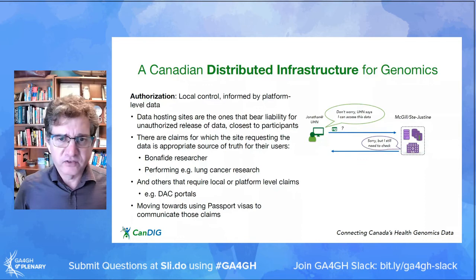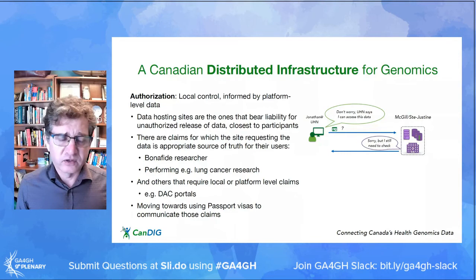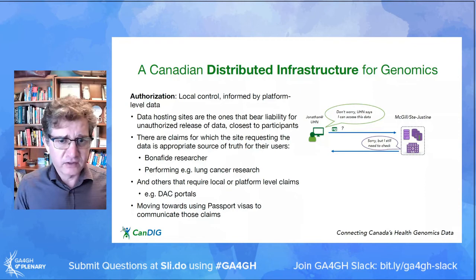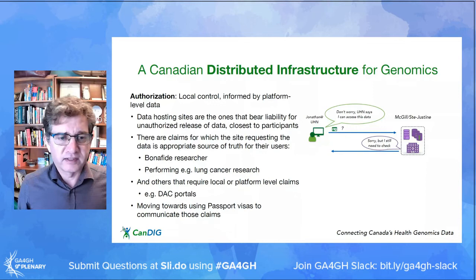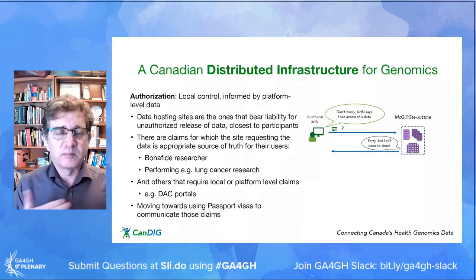For authorization — local control. The data-hosting sites are the ones best able to make authorization decisions and most responsible for the consequences of those decisions. But they need platform-level data to make these decisions — they may rely on claims from a user's home institution about the nature of that user, or require information from DAC portals.